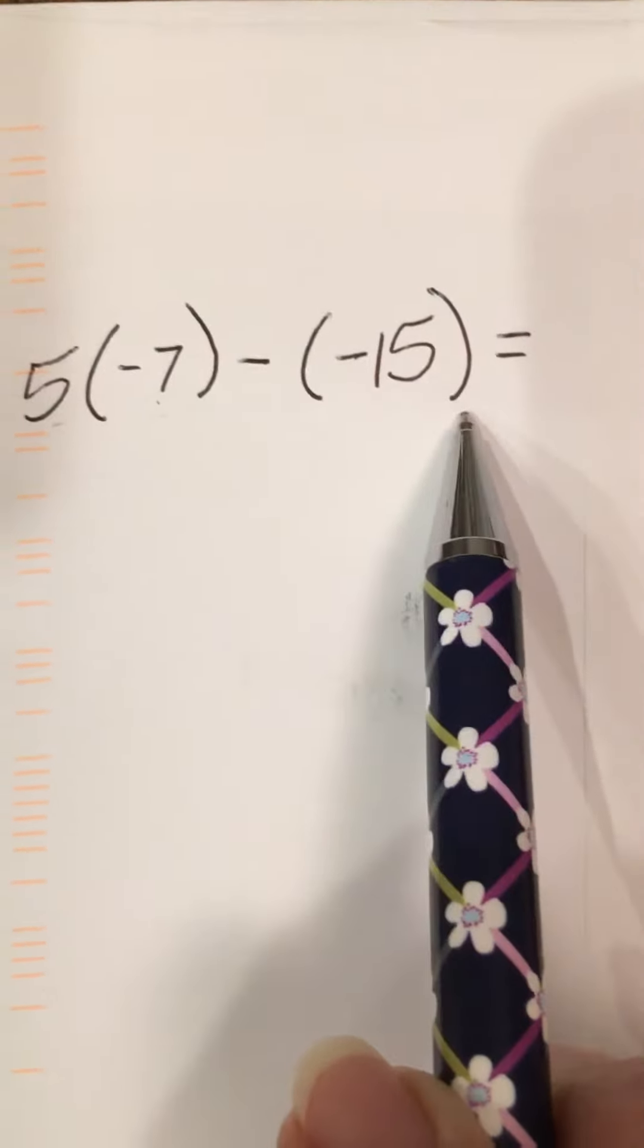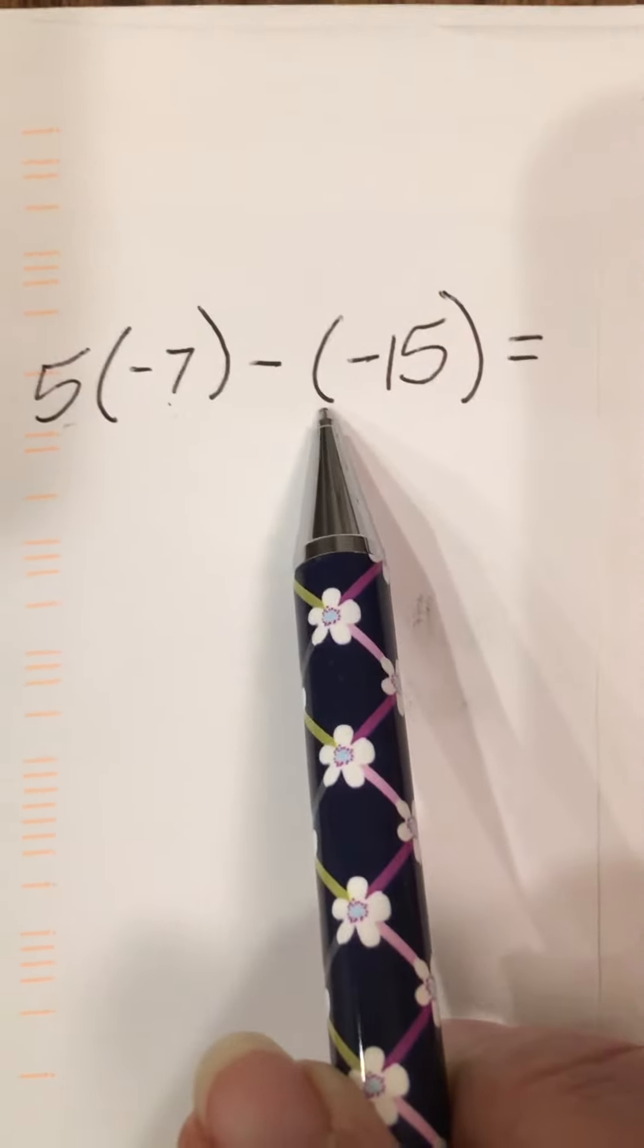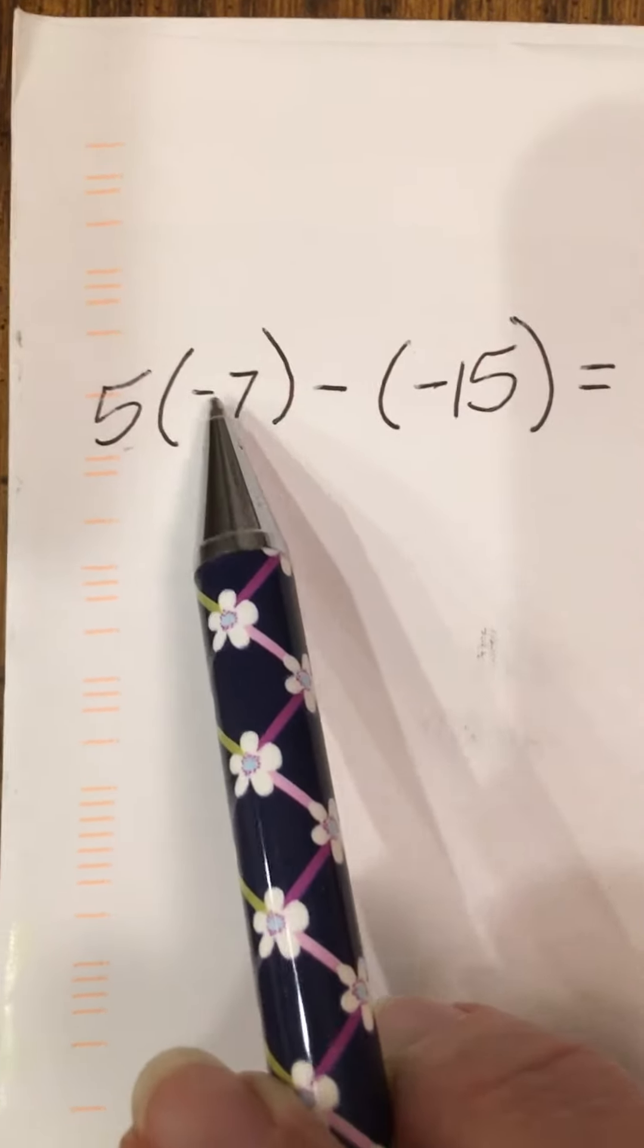They put parentheses around this number so that you could see the number is actually negative 15. And same here, this number here is negative 7.